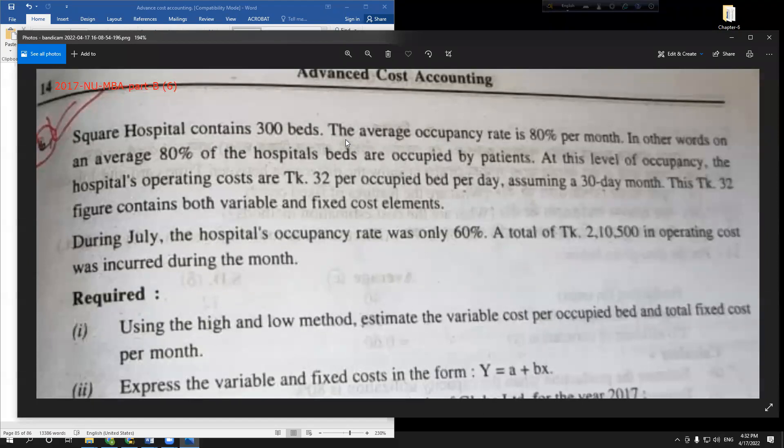During July, the hospital's occupancy rate was only 60%. A total of Tk. 2,10,500 in operating costs was incurred during the month. Looking at the data, we have 80% usage and 60% usage. We need to use the high-low method.